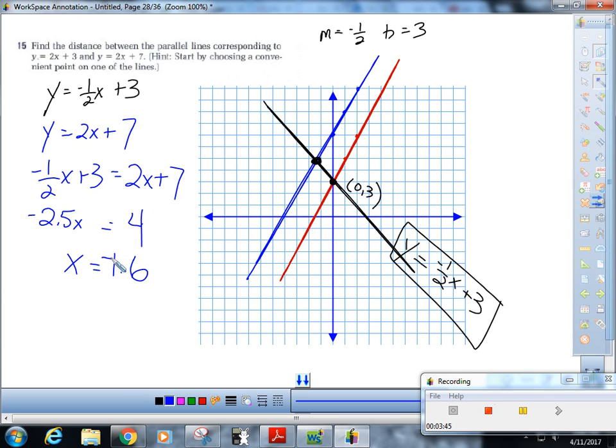So x is negative one point six. And I'll just plug it in to the blue one. So then y is going to be negative three point two plus seven. So is that three point eight? Yep.